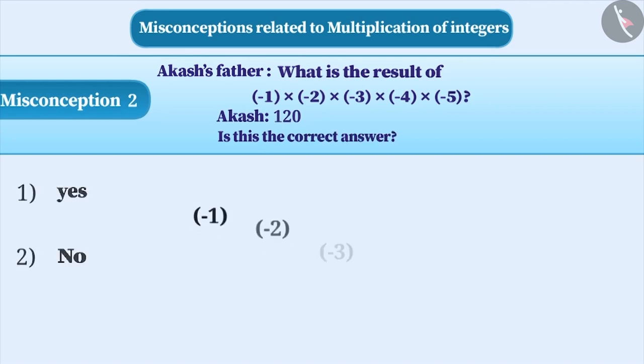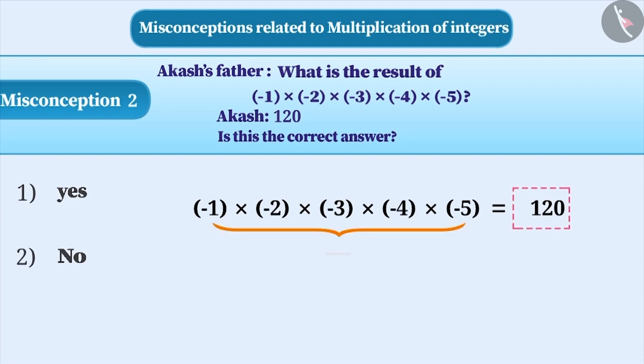Many times, while multiplying two or more integers, numeral values are multiplied and the result is obtained as 120. But there is an incorrect understanding of the signs to be included in the result. Most of the time, while finding the product of integers, it is understood that the product of two or more negative integers is a positive integer.